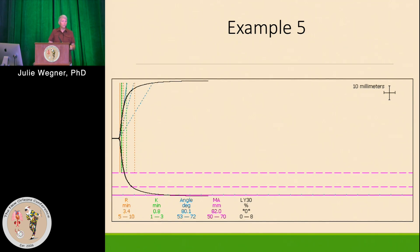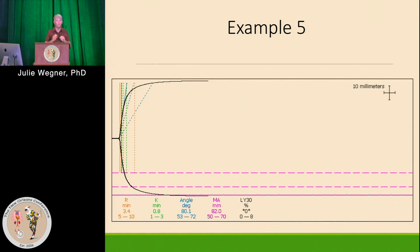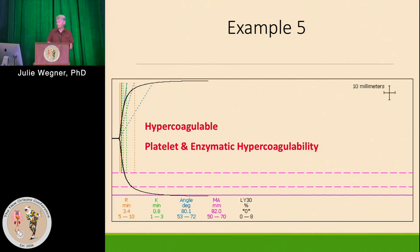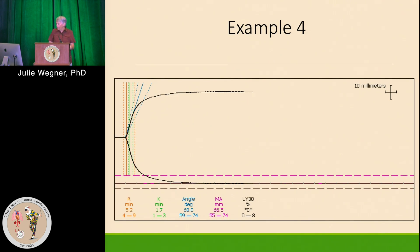Example four demonstrates again, by pattern recognition, a very high MA — hypercoagulable, platelets are definitely being activated. But also the R value is very low, suggesting thrombin is being generated very quickly and potentially activating those platelets to a greater degree. If this patient is bleeding, there is some other issue — it's not because the coagulation system isn't working, at least in this tube of blood. This demonstrates hypercoagulability with both platelet and enzymatic hypercoagulability.